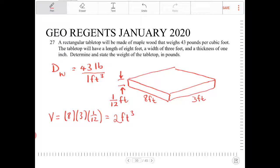And again, the units matter here. This is going to be 2 feet cubed. How do I know that? Because 8 here has a unit of feet, 3 a unit of feet, and 1 twelfth a unit of a foot. So foot times foot times foot is foot cubed. So that's the volume of the tabletop.